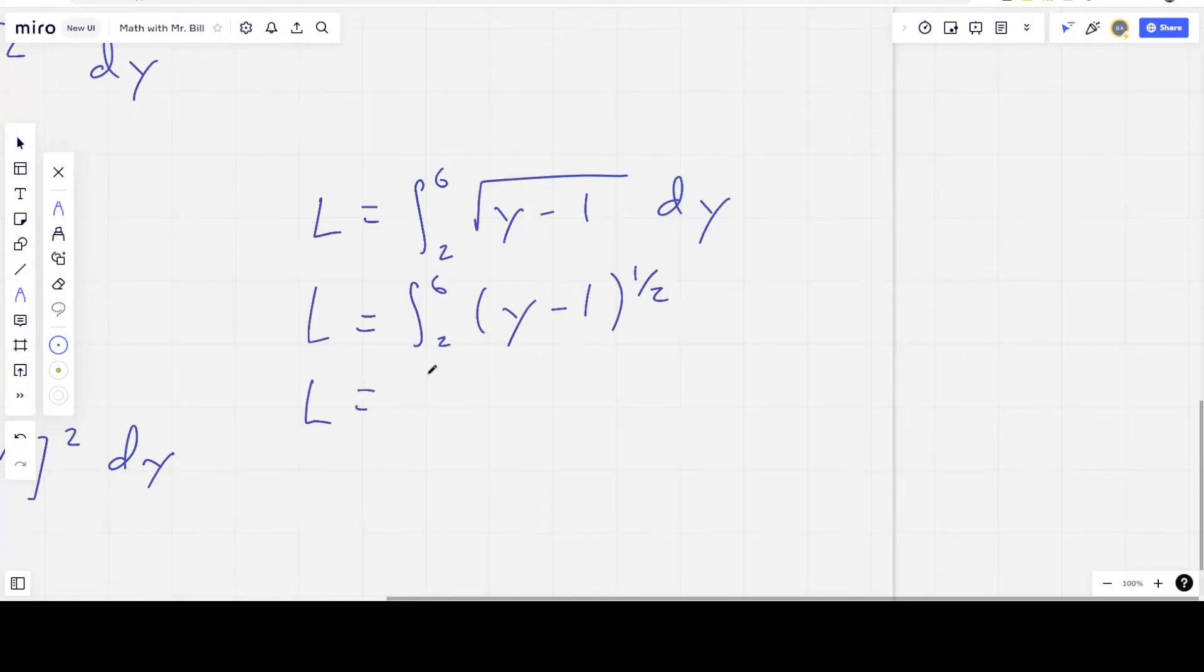This is 2/3 times (y - 1) raised to the 3/2. So you add 1 to the exponent, you flip that result, and you put it down front. And we're going to evaluate this from 2 to 6.